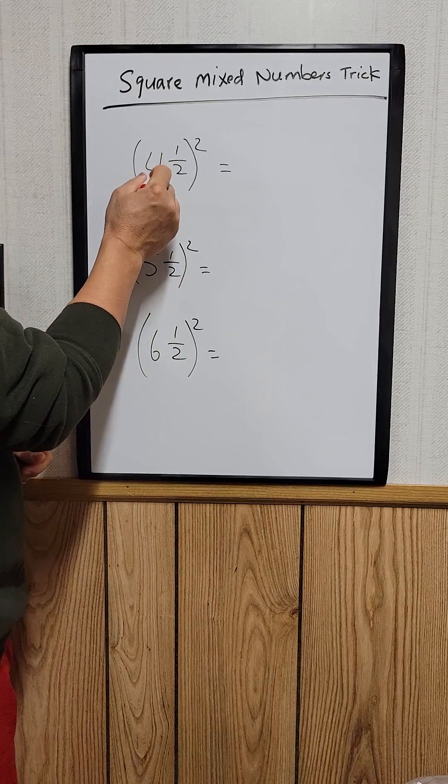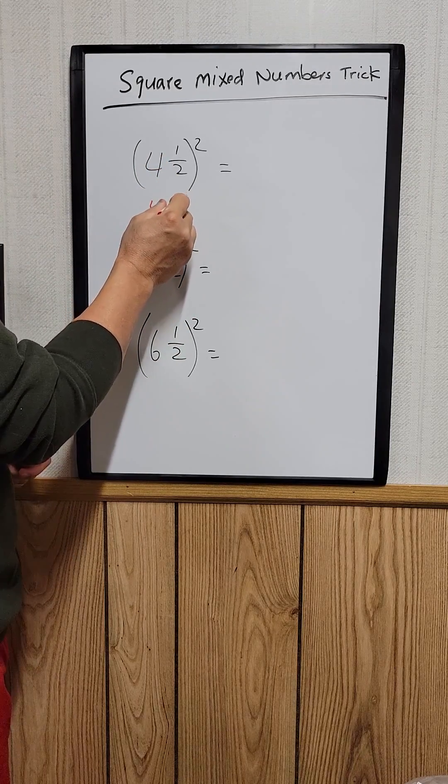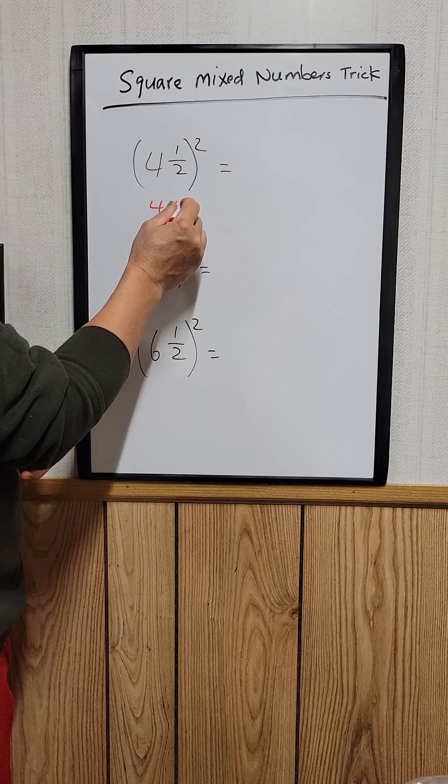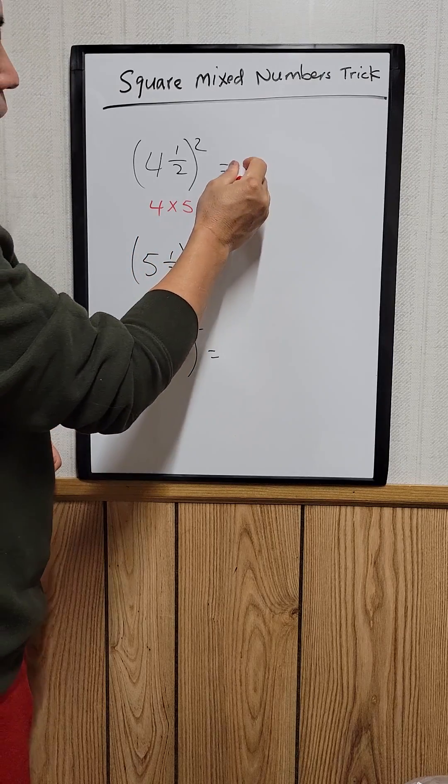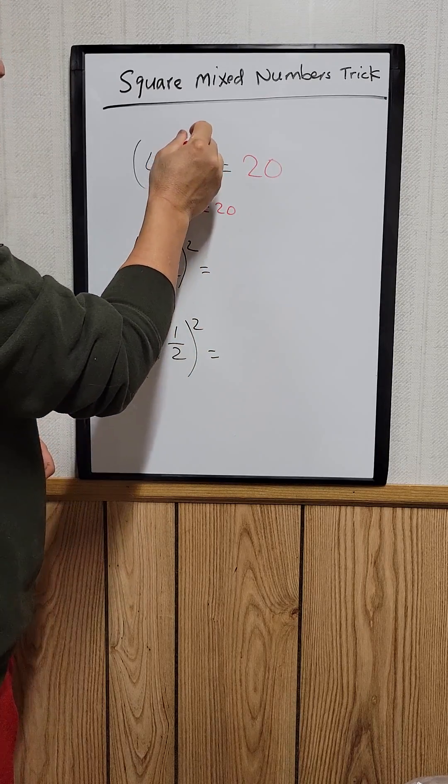What you need to do is just take four down and then multiply by the next number. The next number would be five, which will equal 20. That's 20, and then you square this right here.